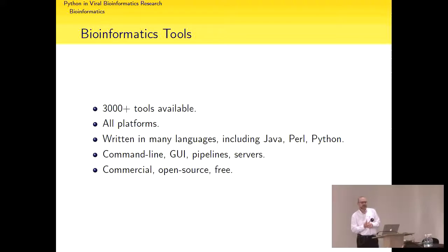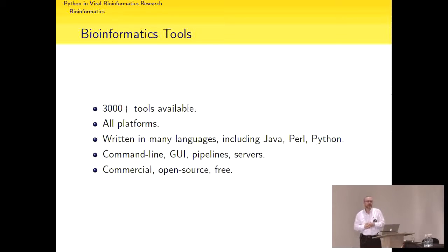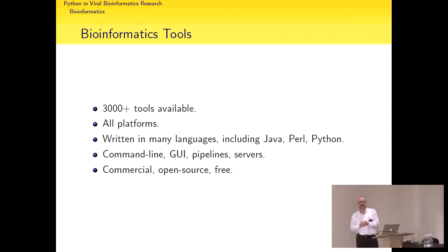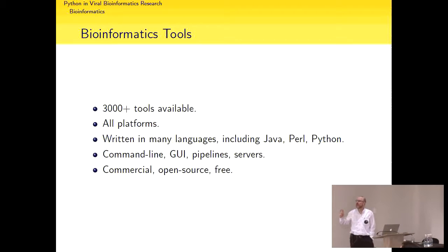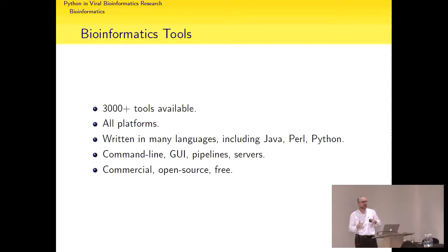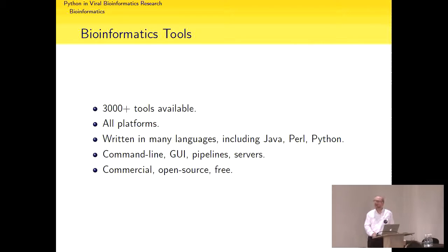The bioinformatics tools available are huge in number — 3,000-plus by search alone. If you look at Felsenstein's page, just the tools for phylogenetic analyses run into the hundreds. A lot of these were developed to scratch someone's own itch. They're available on a wide range of platforms, many languages, ranging from command line tools, GUIs, pipeline servers, commercial, open source, and free. There's so much out there that you can spend almost as much time evaluating solutions as writing your own.